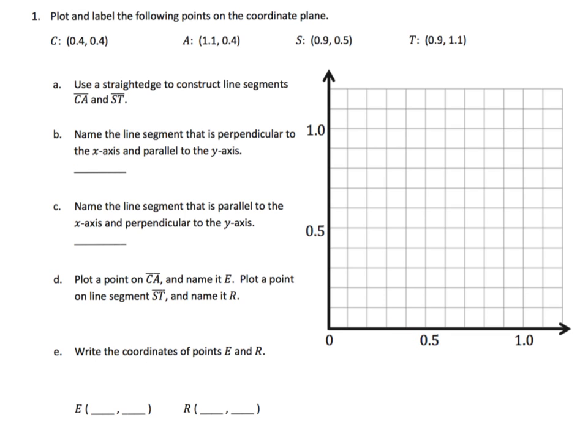And remember, we learned that this is 5 tenths. So each one of these is a tenth. 0.1 is 1 tenth, 0.2 is 2 tenths. So if we're going to plot this, 0.4, 0.4, that's 0.4 on the x coordinate and 0.4 on the y coordinate. And so that is right there. There is our letter C.